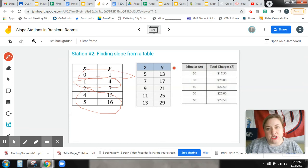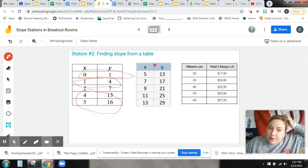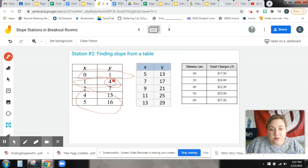So we could do the change in Y, again, over the change in X. And we'll get into the Y2 minus Y1 over X2 minus X1 on the next slide. But that's simply what you're doing here, right? You could do Y2, which is 4 minus 1, which is 3. 1 minus 0 is 1. So 3 over 1. Same thing here. 16 minus 13 is 3. 5 minus 4 is 1. So 3 over 1.